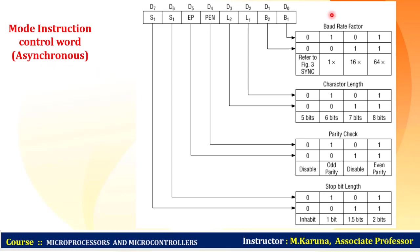The mode instruction word (mode word) for asynchronous mode is an 8-bit register. Bits D0-D1 select the baud rate factor: 11 multiplies baud rate by 64, 01 multiplies by 16, and 10 multiplies by 1. Baud rate indicates the rate at which serial data is being transferred, defined as 1 divided by the time between signal transmissions. This device can be programmed for either asynchronous or synchronous communication — hence it is called USART.